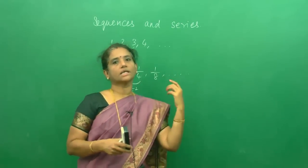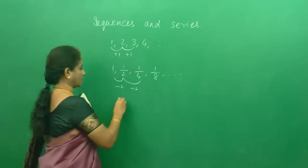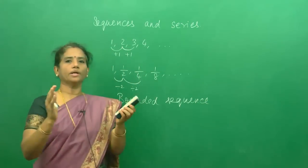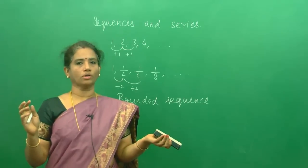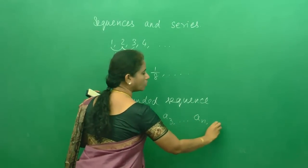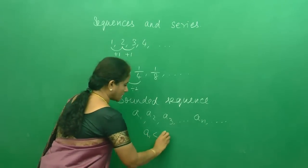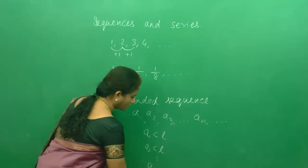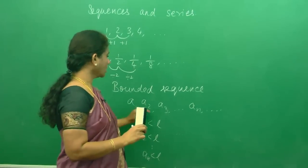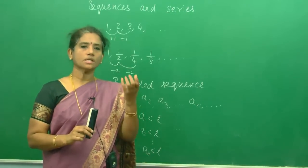Knowing the practical concept of a converging and diverging sequence, we will now discuss what is a bounded sequence. Bounded means you have an upper bound or you can have a lower bound also. So if the terms of the sequence are a1, a2, a3, etc., and if each term is less than a particular number l — meaning a1 < l, a2 < l, and an < l — the sequence is called a bounded sequence.